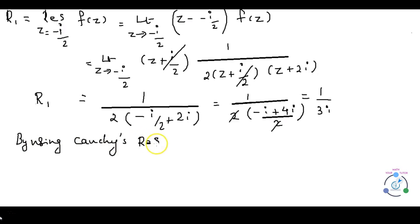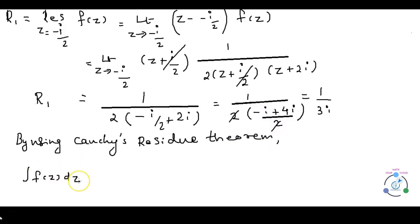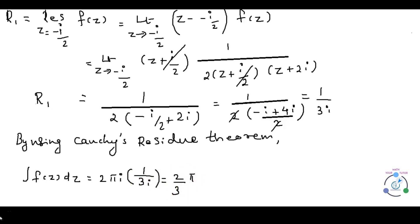By Cauchy's residue theorem, the integral equals 2πi times the sum of residues. So the integral f(z) dz = 2πi · (1/3i). Cancelling i in the numerator and denominator, we get the final answer: 2π/3.